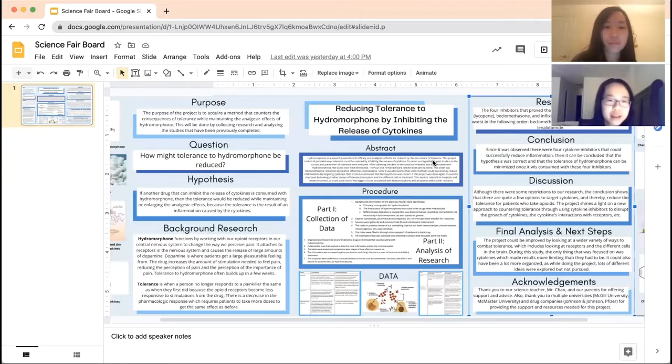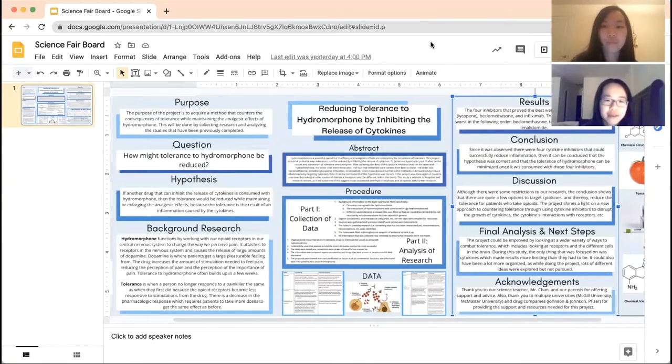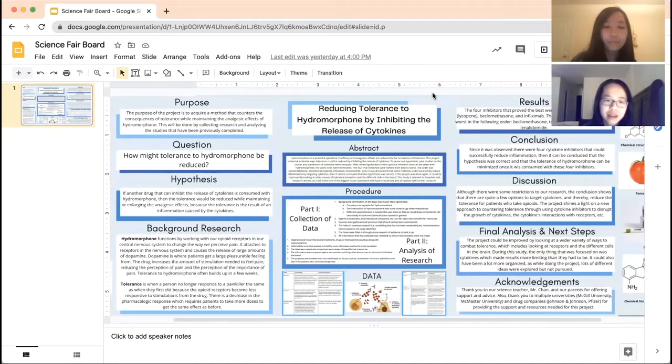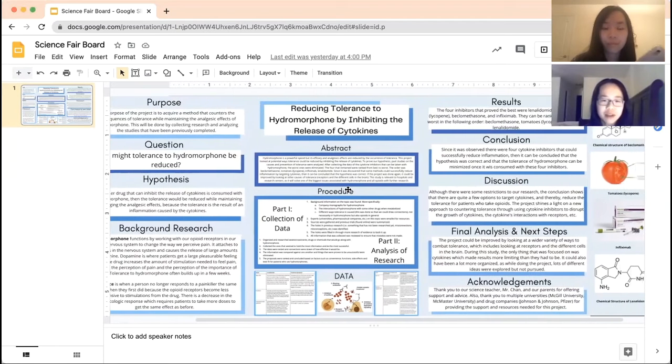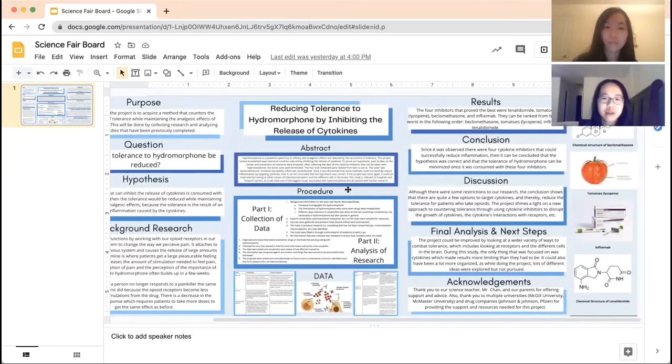Our hypothesis was that if another drug that can inhibit the release of cytokines is consumed with hydromorphone, then the tolerance will be reduced while maintaining the analgesic effects because the tolerance from the inflammation caused by the cytokines. When the drug is consumed, the body no longer feels pain in the normal functions of it originally and it then acts as if a pathogen has entered. Then the immune system cells will release a protein known as cytokines. They do this to protect themselves against viruses and cytokines will release inflammation which is the root of tolerance. When something can either block out cytokines or prevent from releasing, then it will no longer cause inflammation to occur.